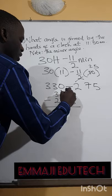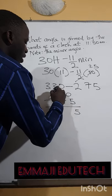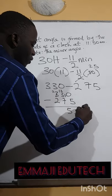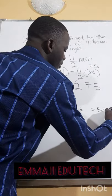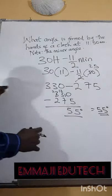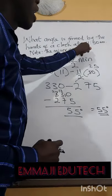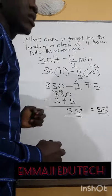Here we have 2, carry 1, 5. We have 2, carry 1, 5. We have 55 degrees. That is the answer. That is the angle formed at 11:50 a.m.